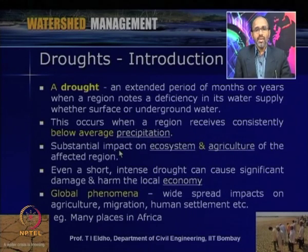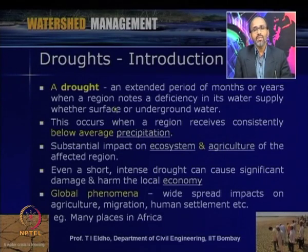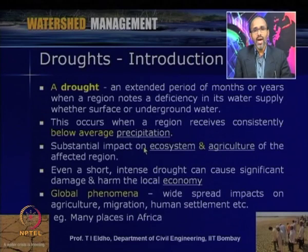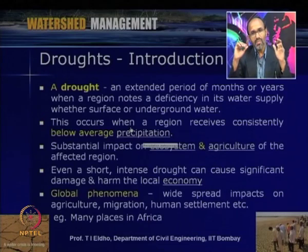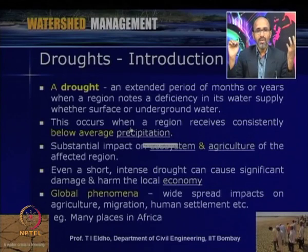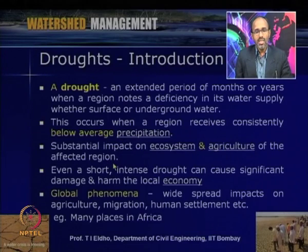There is substantial impact of droughts on the ecosystem, agriculture, human beings, flora and fauna. The affected region has no sufficient water either in terms of surface water or ground water — that is a major issue. Even a short, intense drought can cause significant damage and harm the local economy.